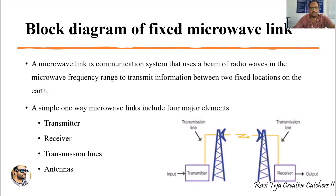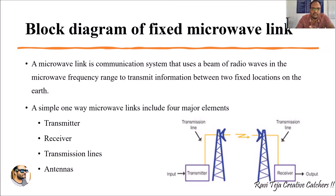Hello everyone, welcome to the course of Microwave Communication and Television. In today's session we are going to learn about the block diagram of fixed microwave links. A microwave link is a communication system that uses a beam of radio waves in the microwave frequency range to transmit information between two fixed locations.